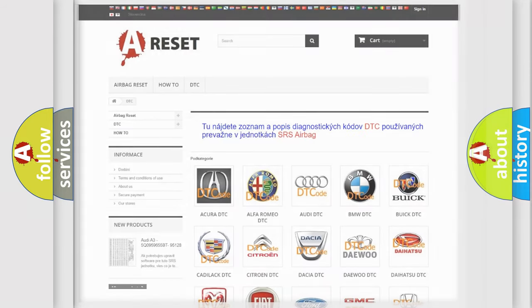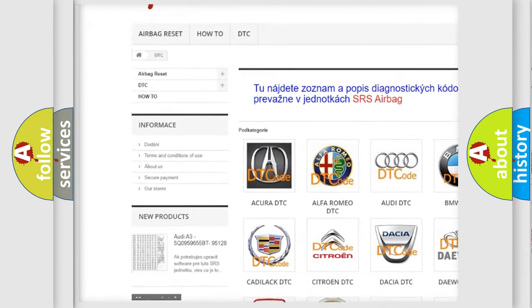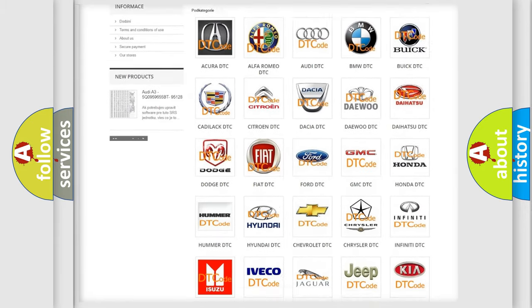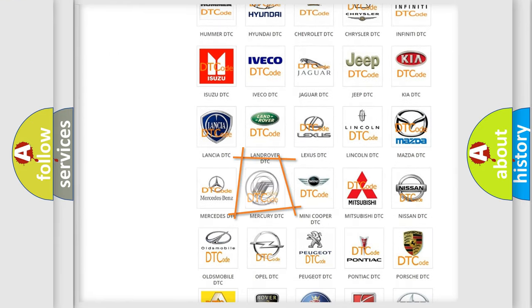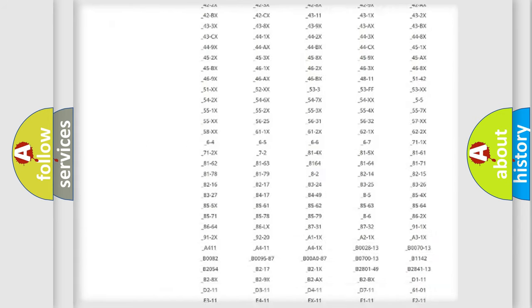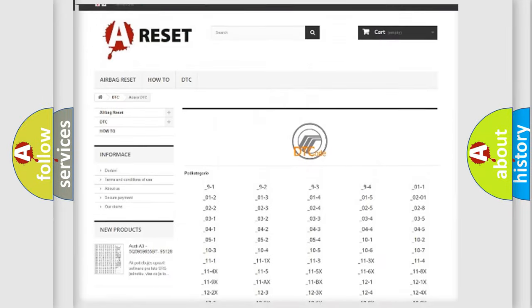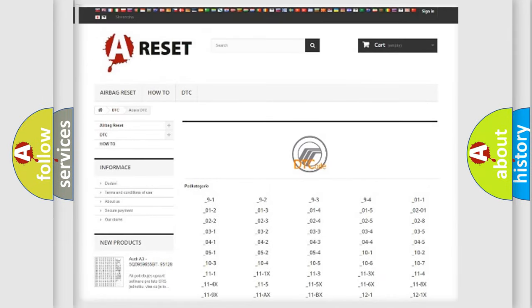Our website airbagreset.sk produces useful videos for you. You do not have to go through the OBD2 protocol anymore to know how to troubleshoot any car breakdown. You will find all the diagnostic codes that can be diagnosed in Mercury vehicles, also many other useful things.